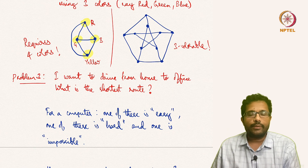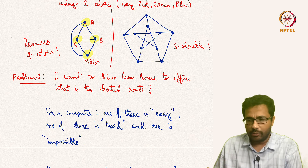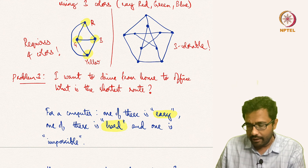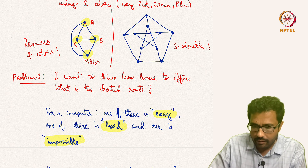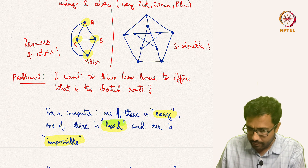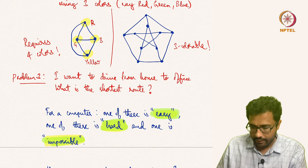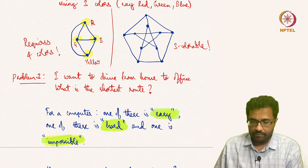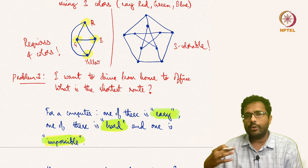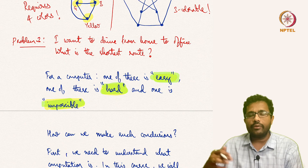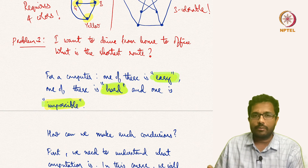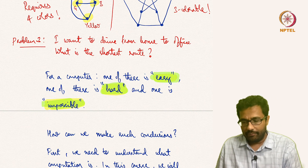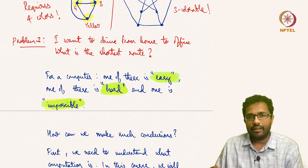It turns out that one of these problems is easy, one of them is hard, and the third one is impossible. The meaning of easy, hard, and impossible is not defined right now, but I am just saying that one is easy, one is hard, and one is impossible. And how we are able to infer each of these things — how we can reach these conclusions — is what we will explore.